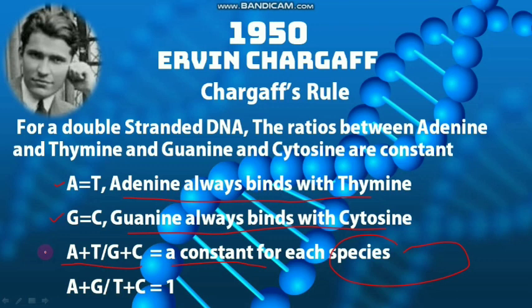Additionally, adenine plus guanine to thymine plus cytosine is always equal to 1 — meaning the ratio of purines to pyrimidines is always equal to 1, because purines always bind with pyrimidines. These four statements form Chargaff's conclusion: for a double-stranded DNA, the ratios between adenine and thymine and between guanine and cytosine are constant.